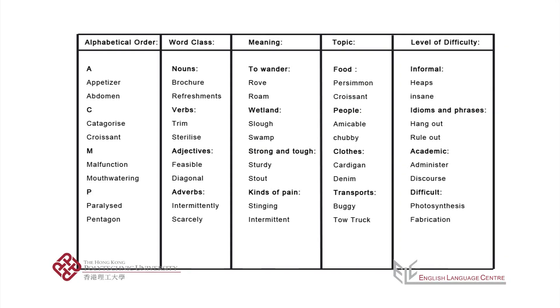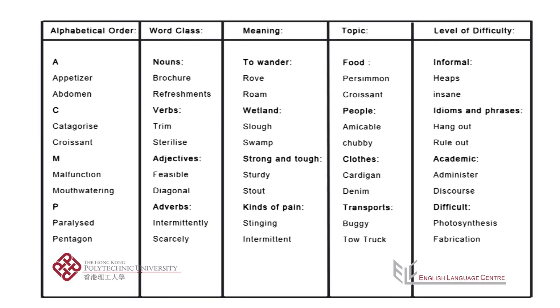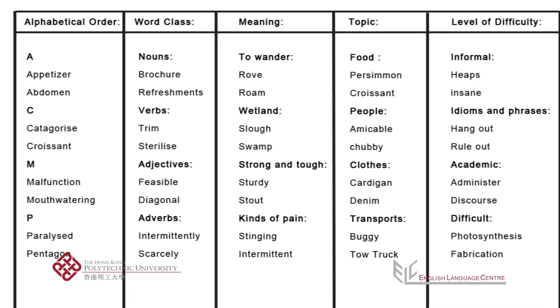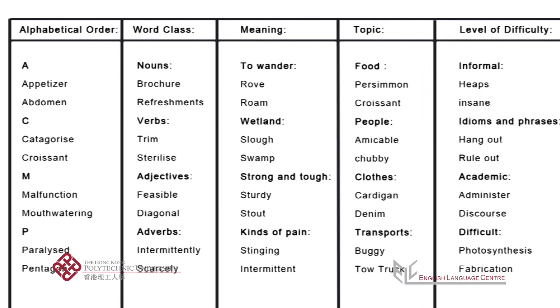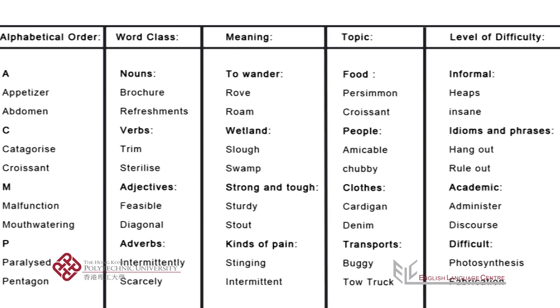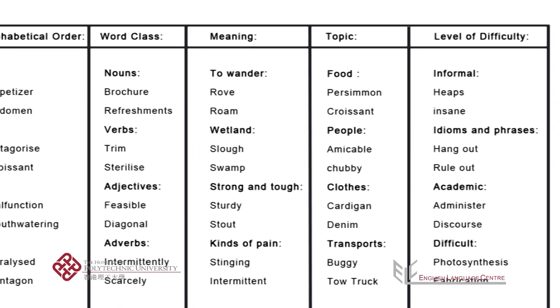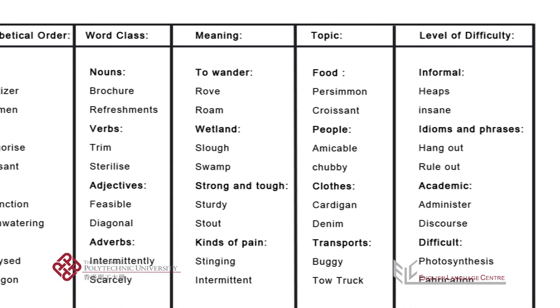But how can I organize the words and the phrases that I want to learn? Well, you could classify them in alphabetical order, or group them according to the part they play in a sentence — so, verbs, nouns, adjectives, and so forth. You could group them by meaning, or by topic, or even by level of difficulty.